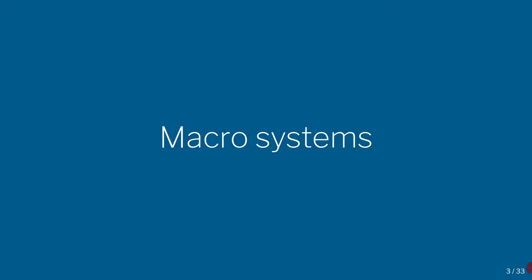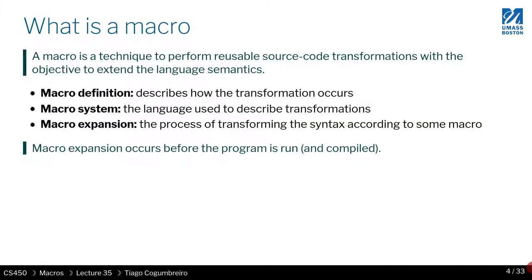Today I want to introduce the idea of macro systems — you've actually seen a macro system when I introduced the idea of the do notation. So now we're going to learn a bit about how you would recreate or understand that macro. First of all, what is a macro? A macro is a technique that allows you to do source-to-source code transformations. The main objective is extending the language semantics, but it may also be things that are more trivial — not about the language per se, but to enrich or simplify certain libraries.